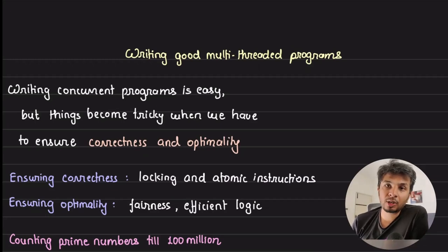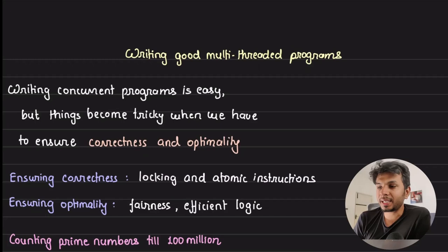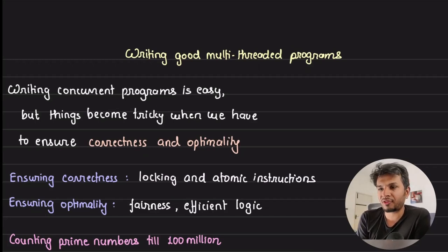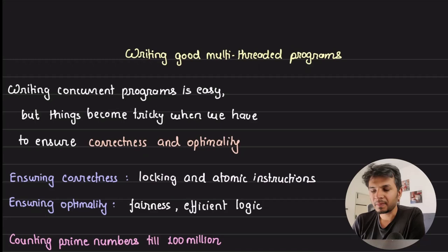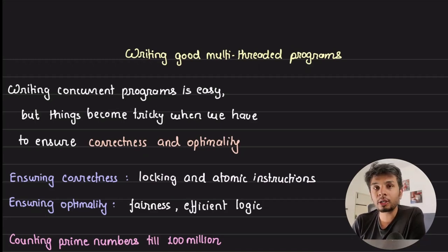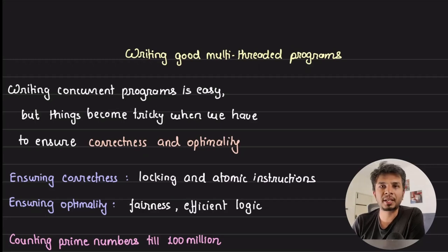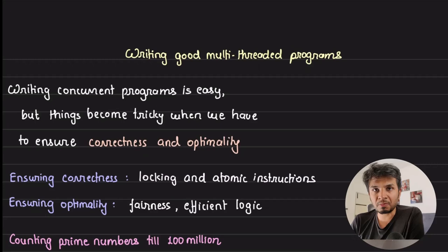To get maximum performance out of our program we tend to add threads to it — but is that it? Just adding threads obviously makes our program go faster, but is this the best we can get out of our code? Is this the most efficient implementation? In this video, what I'd like to talk about is how to write good multi-threaded programs. A good multi-threaded program is one that uses multiple threads.